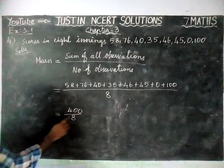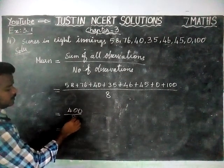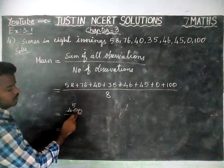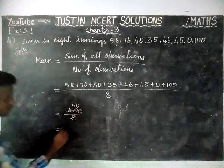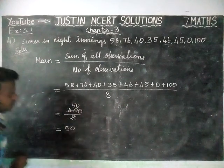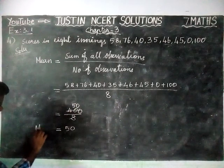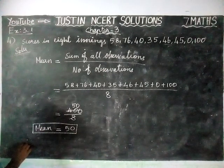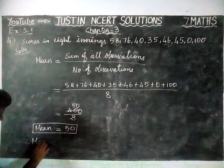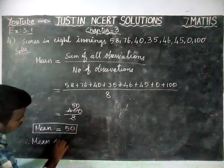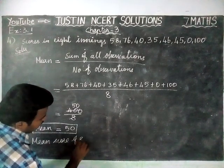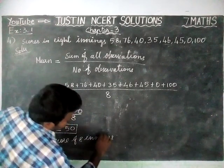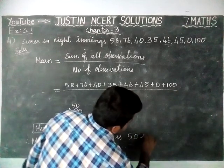400 divided by 8: 8 ones are 8, 8 fives are 40, giving us 50. So the answer is 50. Mean is equal to 50. Therefore, the mean score of 8 innings is 50 runs.